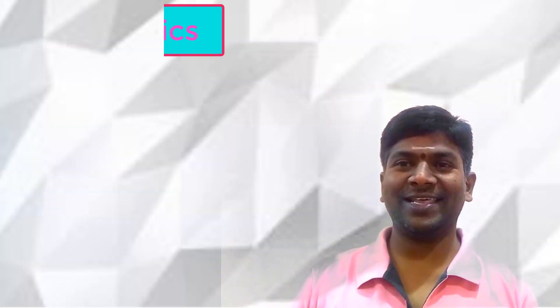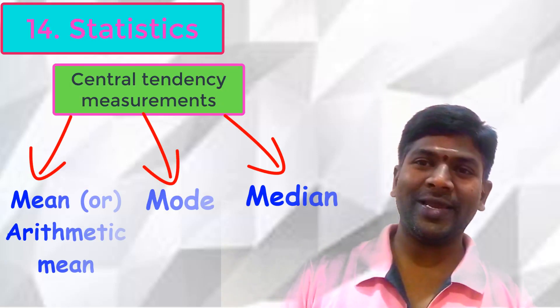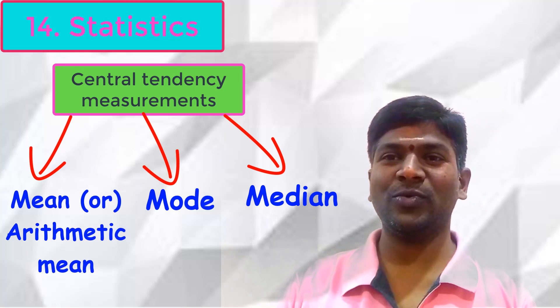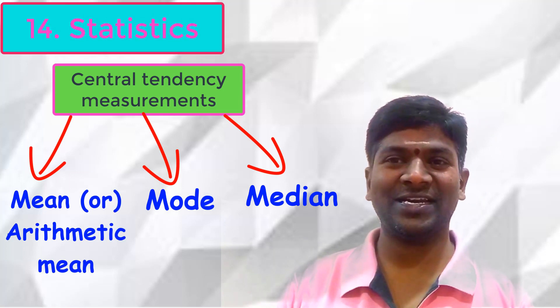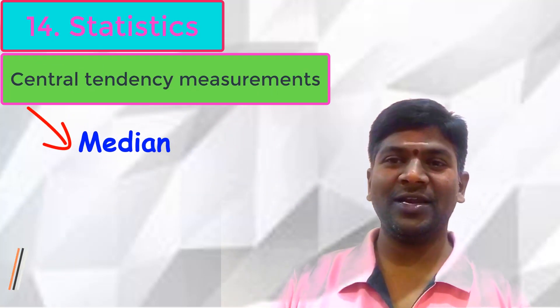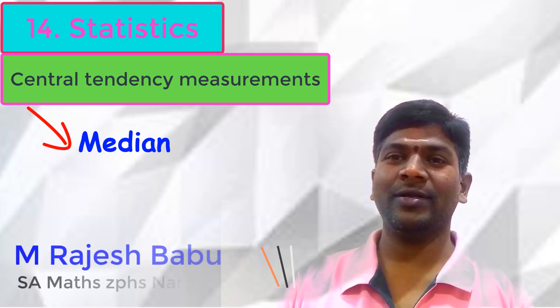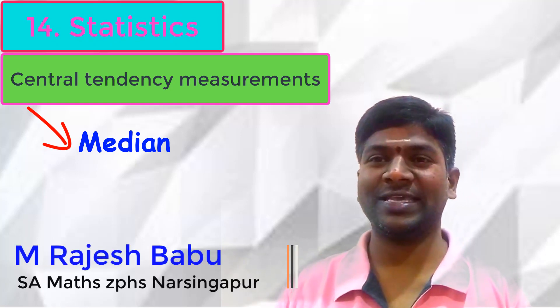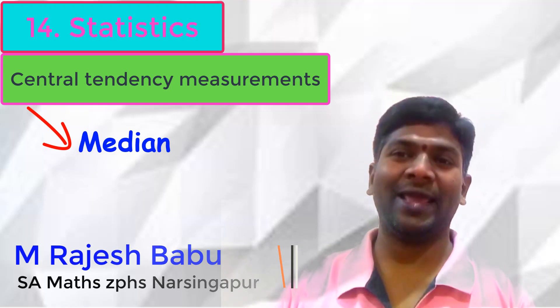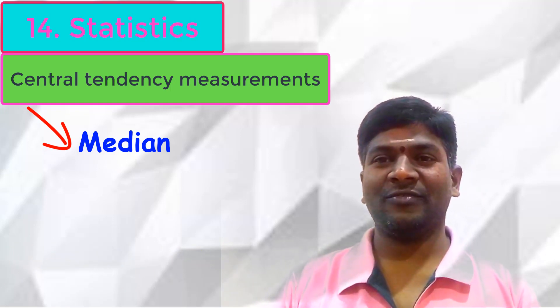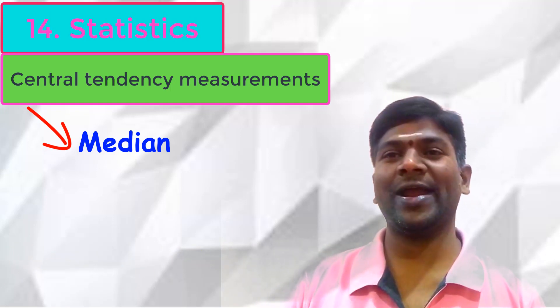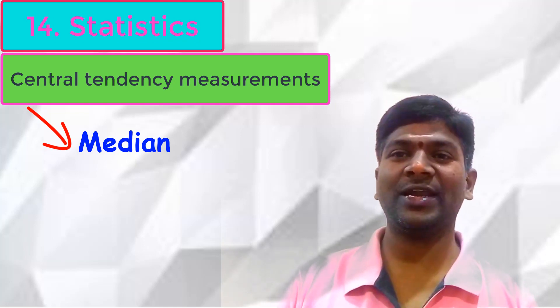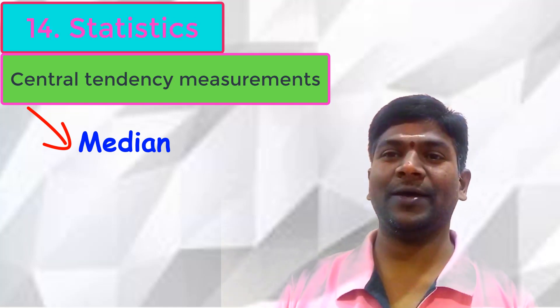Hi viewers and students. In the last classes we discussed central tendencies — mean and mode. Today, let us discuss one more central tendency, that is median. Children already know the median of ungrouped data from earlier classes — 7th, 8th and 9th. In this class, we discuss how to find the median of classified data or grouped data.